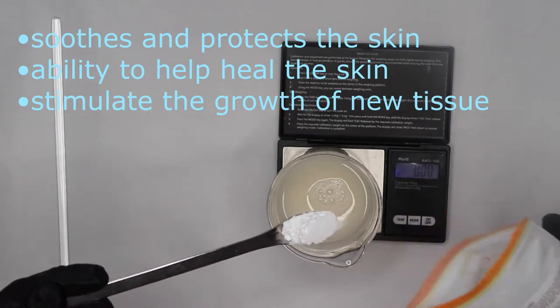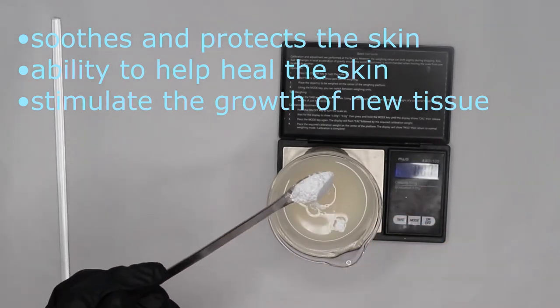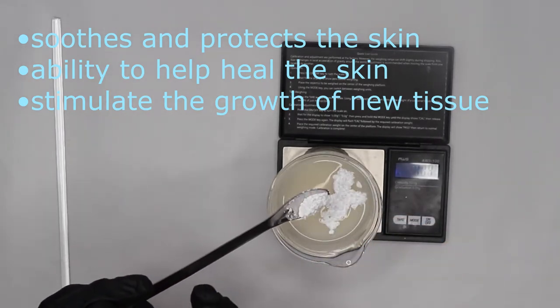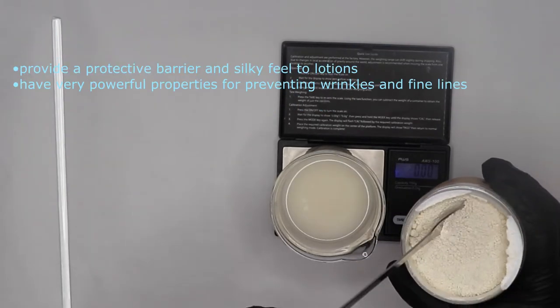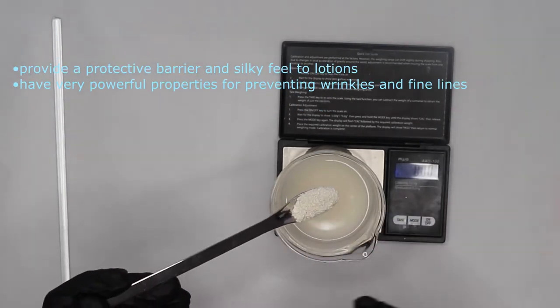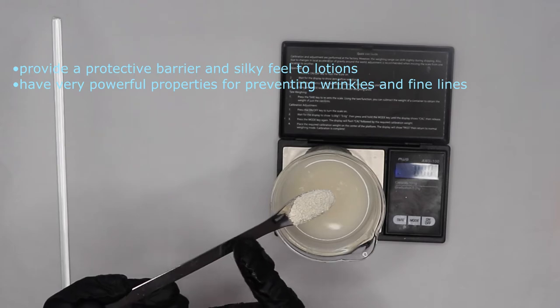2.4 grams of allantoin. 2.4 grams of silk peptides. This is for a nice silky smooth feeling.